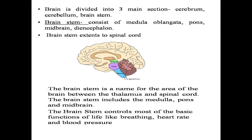The brainstem is the area of the brain between the thalamus and the spinal cord. It consists of the medulla oblongata, pons, midbrain, and diencephalon. The brainstem controls all the basic functions of life.